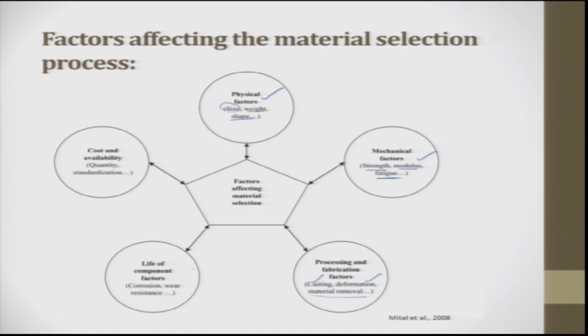The life of the component and factors like corrosion resistance and wear resistance are also very important. Cost and availability play a major role. So the five major factors are: physical factors, mechanical factors, processing factors, life and component factors, and finally cost.